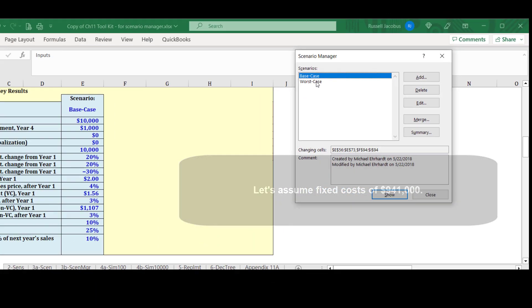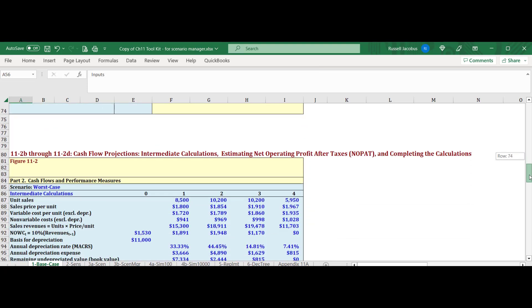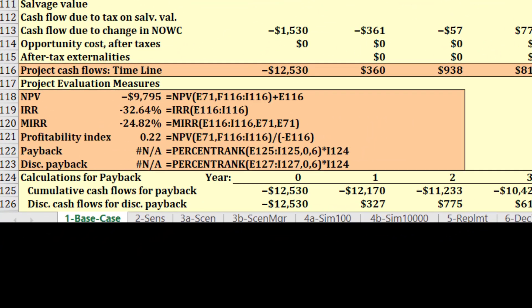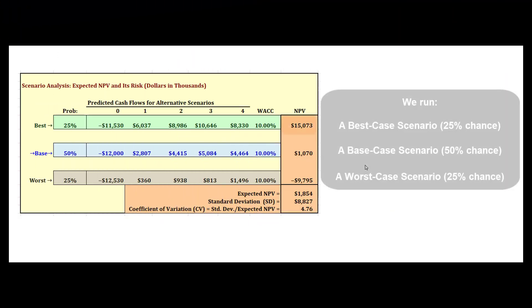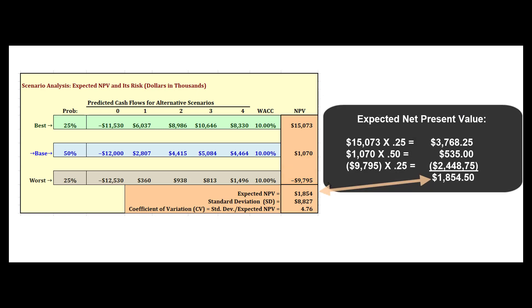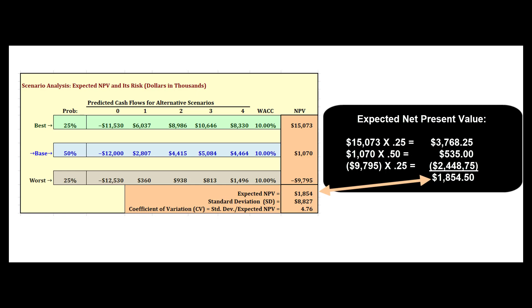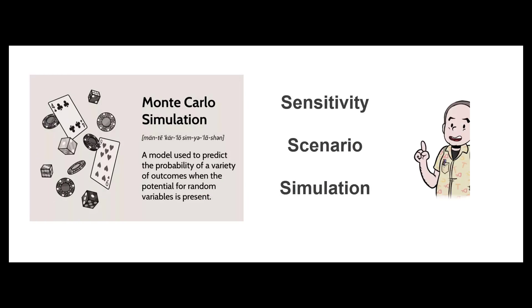We click OK, show the worst case, and scroll down to see NPV has turned negative — it's now negative $9,795,000. If we assign a 25% probability to the best case, 50% to the base case, and 25% to the worst case, we get an expected NPV of positive $1,854,000. But the standard deviation is $8,827,000, meaning 68% of outcomes fall between negative $7,757,000 and positive $9,879,000 — that's a lot of risk.